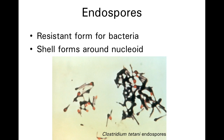Another feature of bacteria is that they can form structures called endospores. Endospores form when nutrients become limiting or some other environmental factor makes it difficult for the bacteria to grow. So they can kind of hunker down and form an endospore that can resist until conditions change.